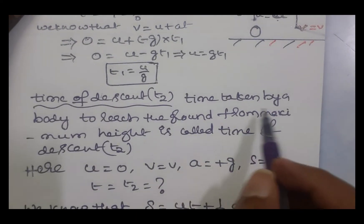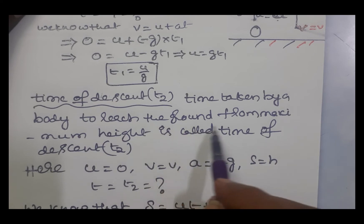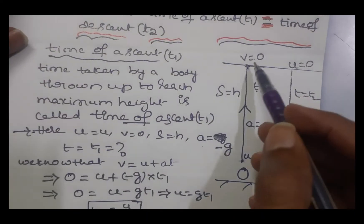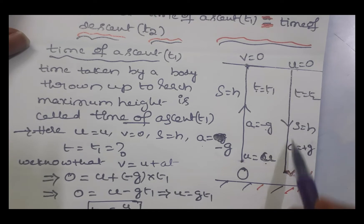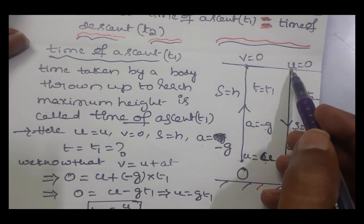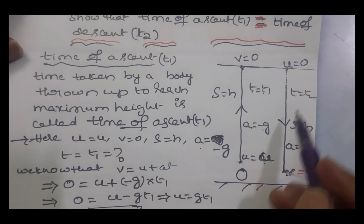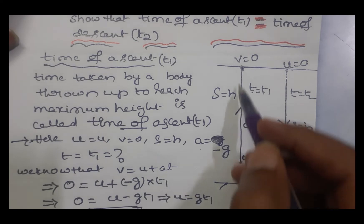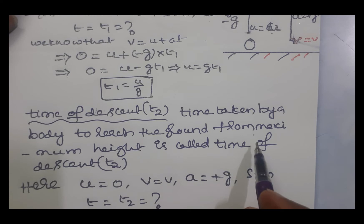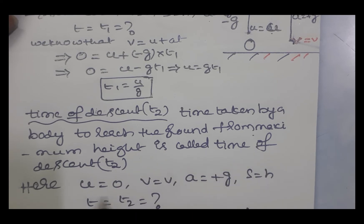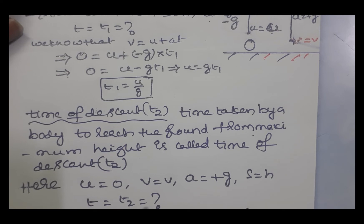Time of descent is the time taken by a body to reach the ground from maximum height. The body has reached maximum height and is now coming down — the time taken to come down from maximum height to the ground is called time of descent. In this case, the body acts as a freely falling body, with initial velocity zero, final velocity v, acceleration due to gravity positive g, height h, and time of descent t2.